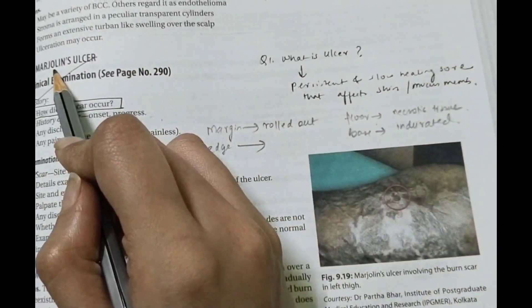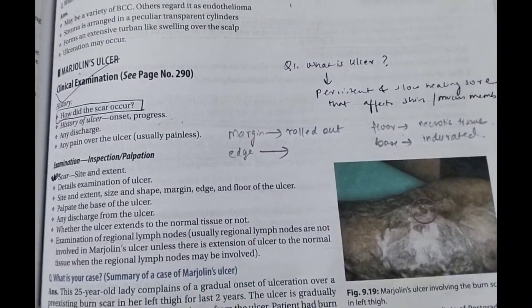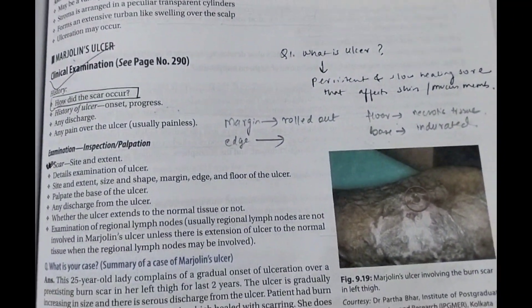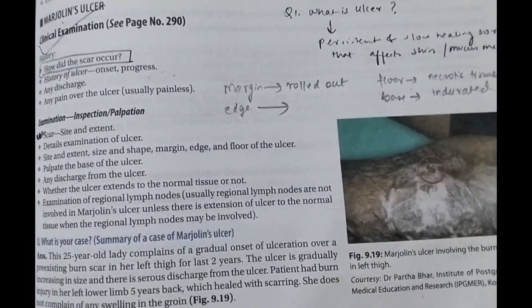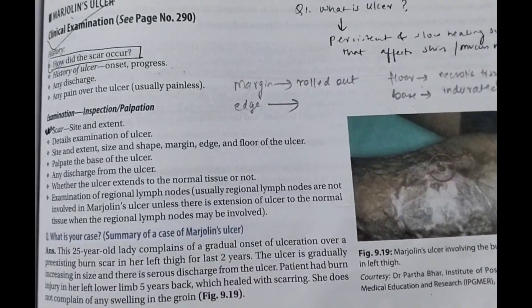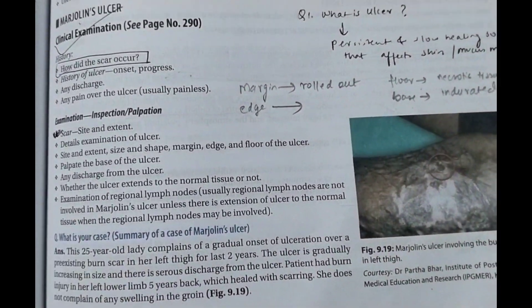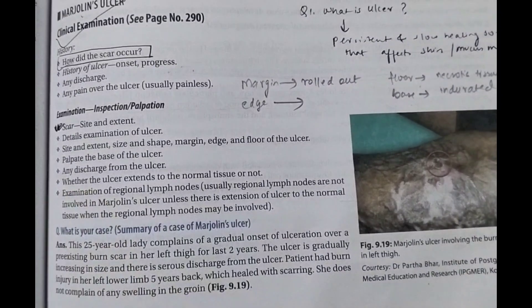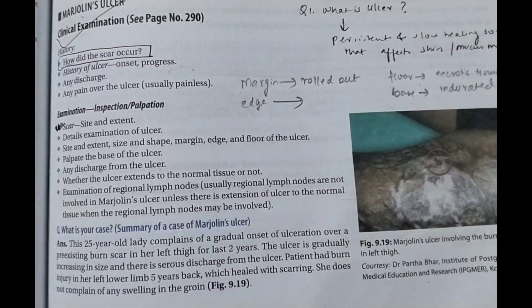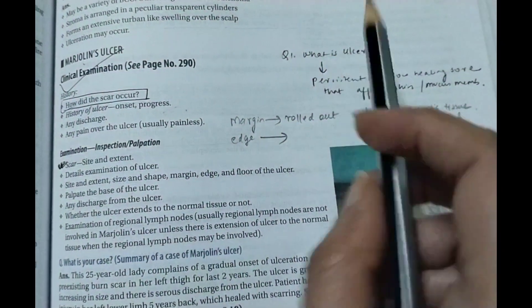In this video, we will study about Marjolein's Ulcer. You need to know what is an ulcer. I have made a video on the different types of ulcer — you can go and watch there. An ulcer is a persistent and slow-growing sore that causes a breach in the continuity of the skin and the mucous membrane.